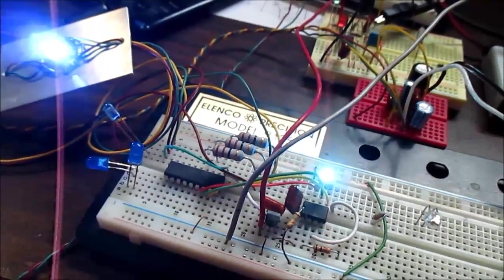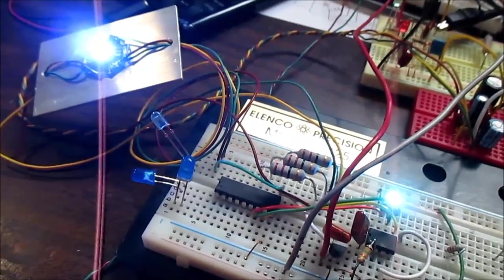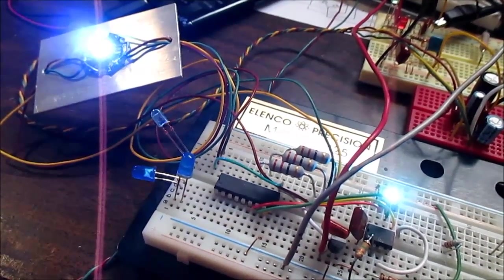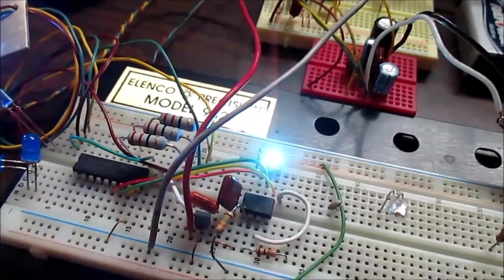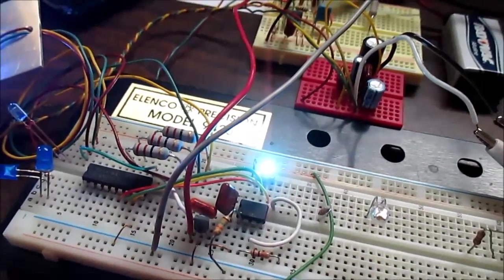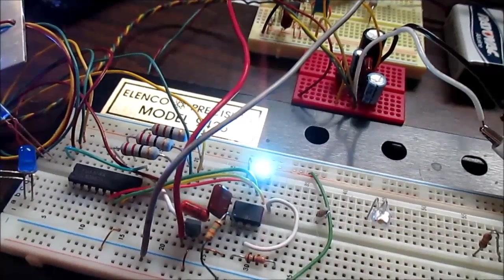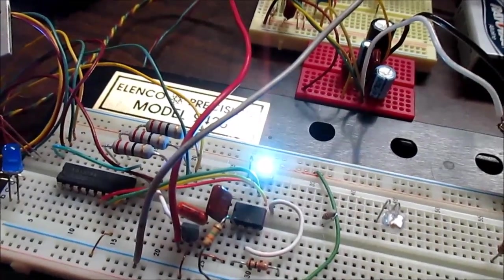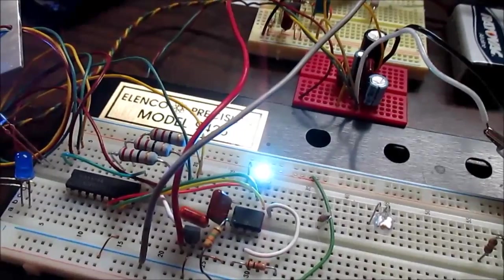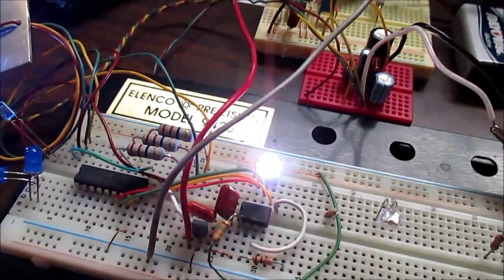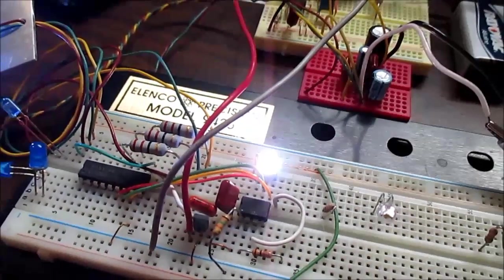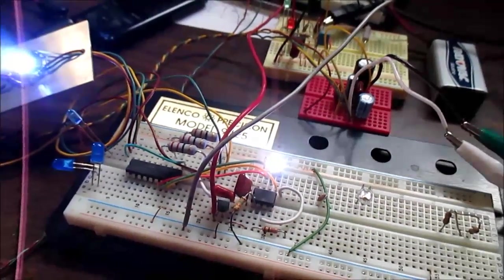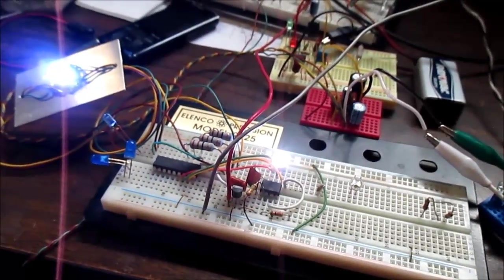So there you have it - some 8 pin dual inline package ICs that I think are very useful, popular, and fun to use, great for do-it-yourself experimenters like myself. Well, if you think I've forgotten something that might be popular, maybe phase lock loops or something like that, let me know, discuss it down in the comment sections. Well, that's it. View, rate, subscribe. Thanks a lot for watching.